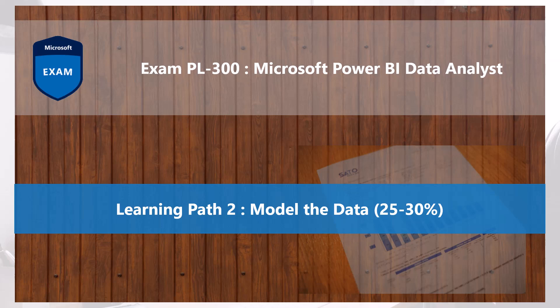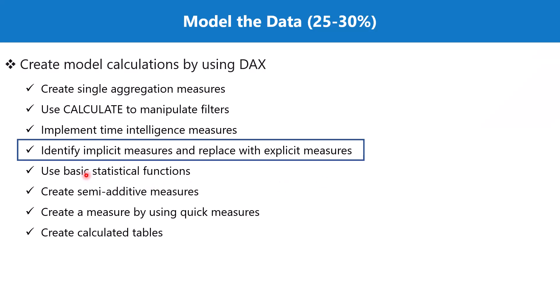Bismillah ar-Rahman ar-Rahim. Hello everyone. Welcome back to the PL300 exam preparation series, where we are exploring the second learning path: model the data. In this video we are going to discuss the topic 'identify implicit measures and replace with explicit measures,' which is part of the section 'create model calculations by using DAX.'